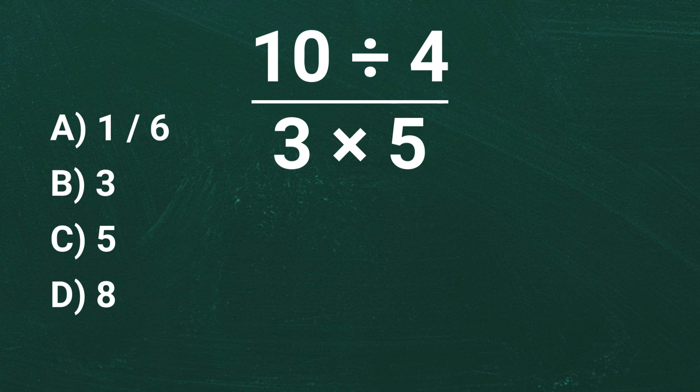First, let's simplify the denominator. In the denominator, we have 3 times 5. Multiplying them gives us 15. So the expression now looks like this.